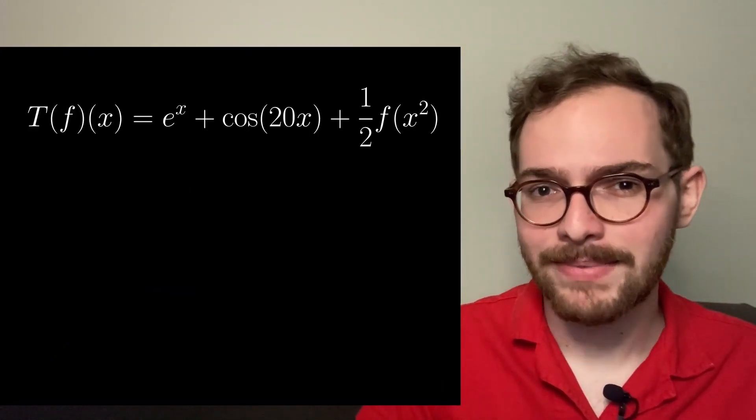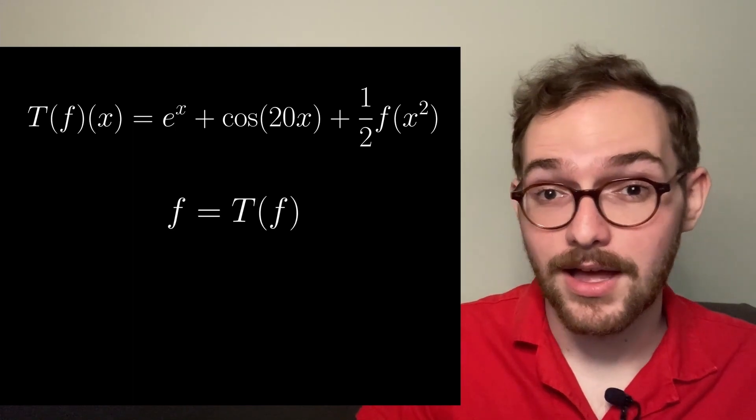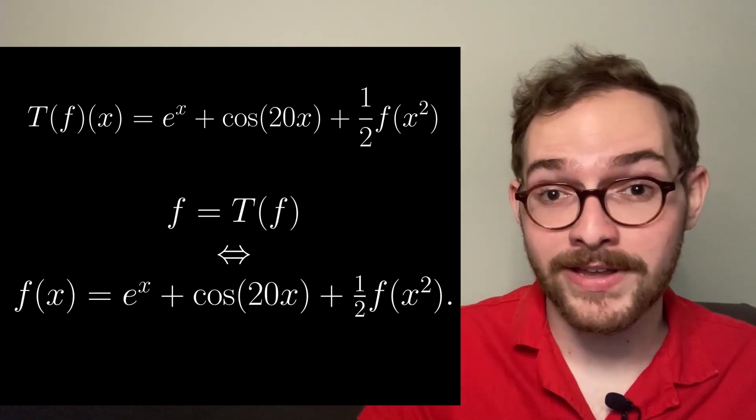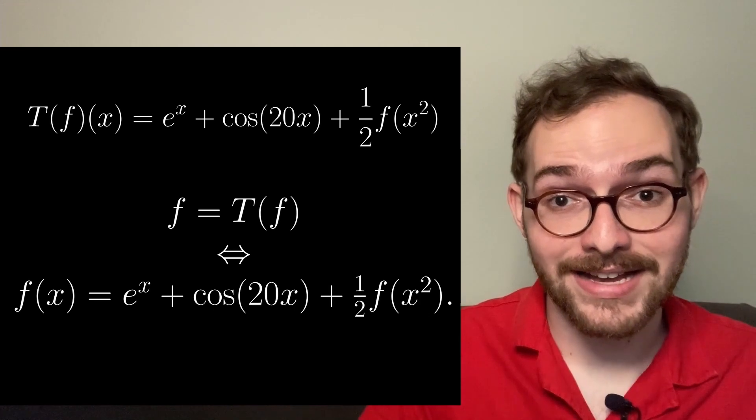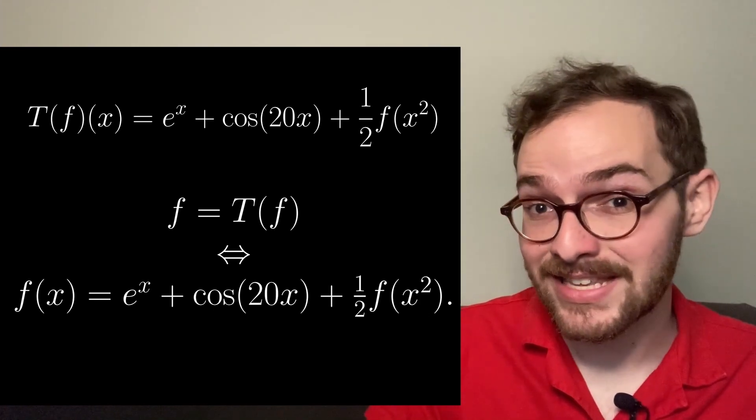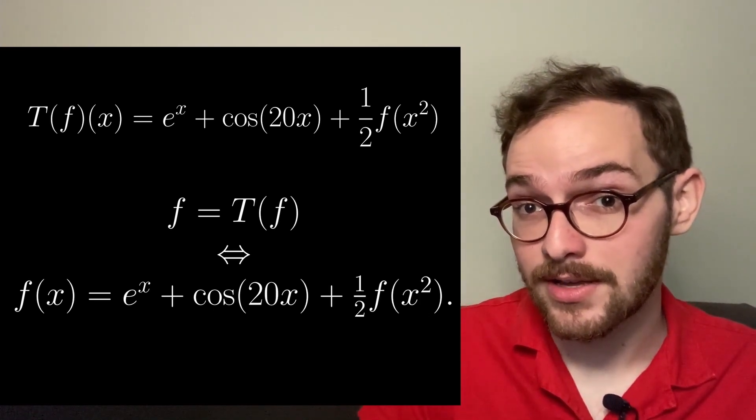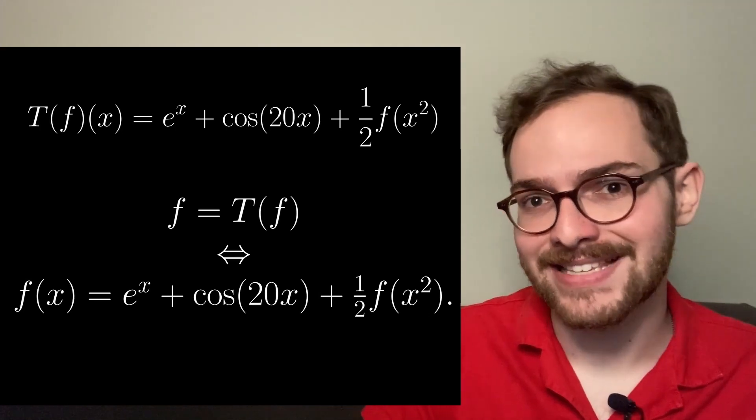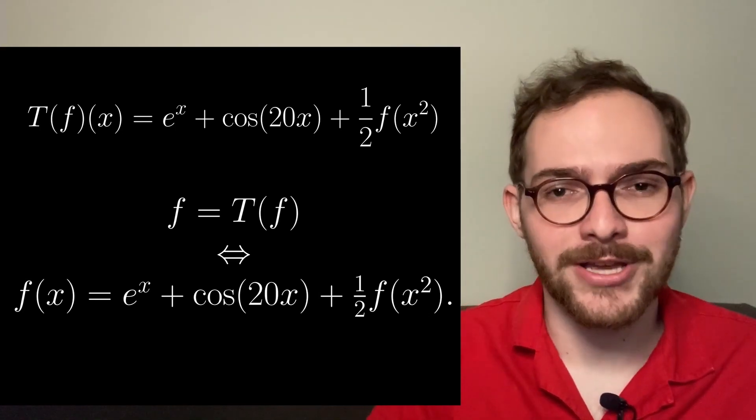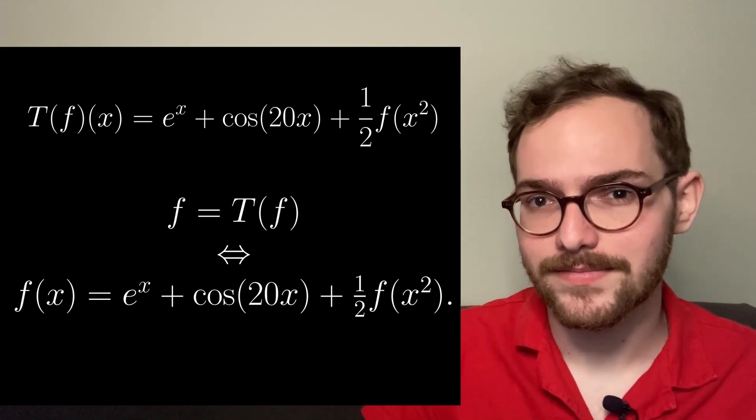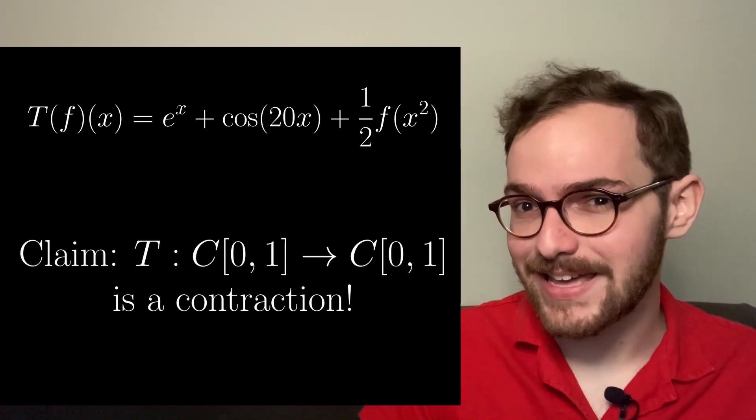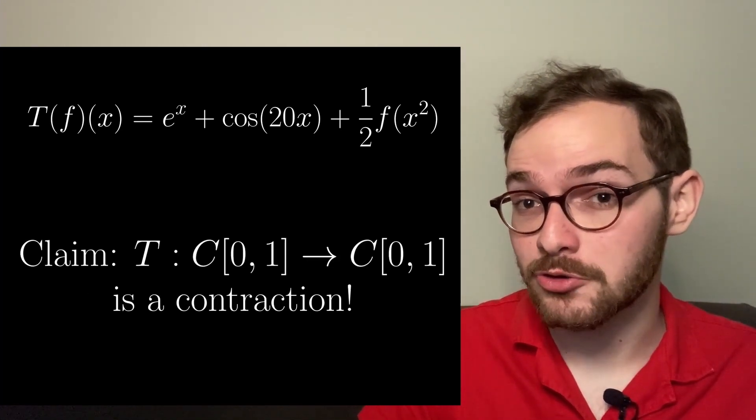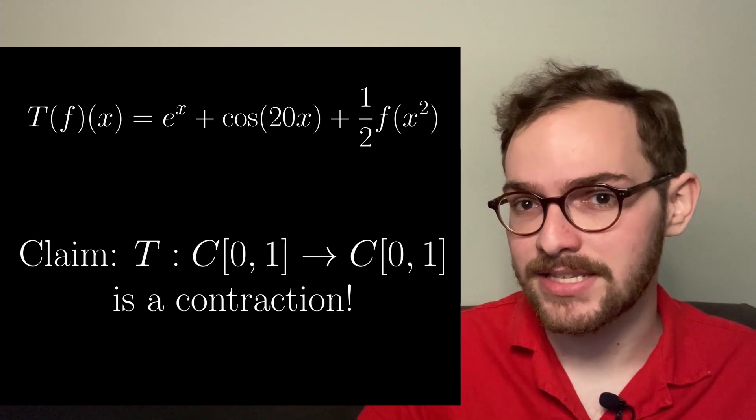Okay, let's get back to the problem at hand. A fixed point of T would be a function such that for all x, f of x is equal to T of f of x. And that's the same as saying that f satisfies the equation that we're trying to solve. What I claim is that T is a contraction on the space C[0, 1].